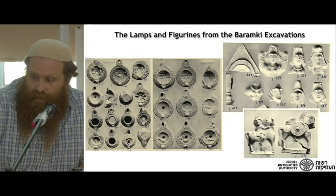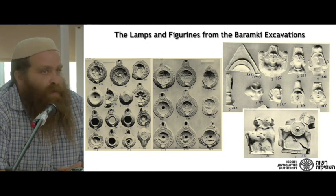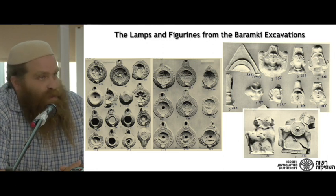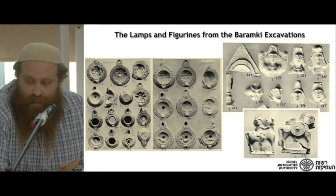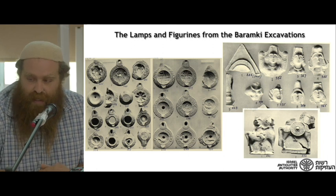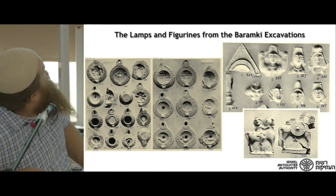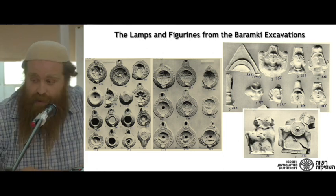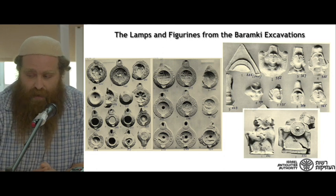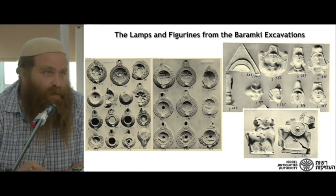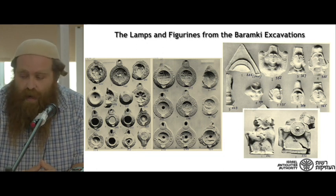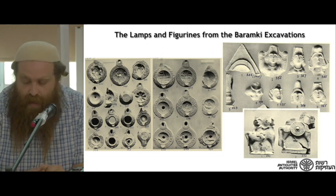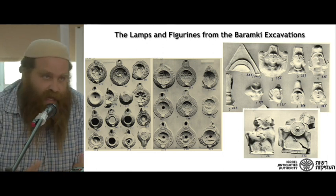Inside the cisterns there were a number of terracotta lamps and figurines. These are the images published in the original Baramki publication. I want to call attention to the flat discus lamps in the middle image — we'll return to those. These lamps are dated to the late Roman period, between the third and fourth centuries, and I think they trickle into the early fifth century as well.